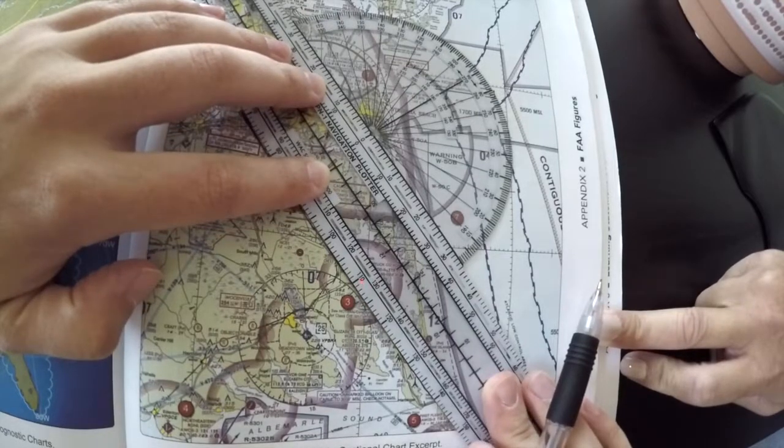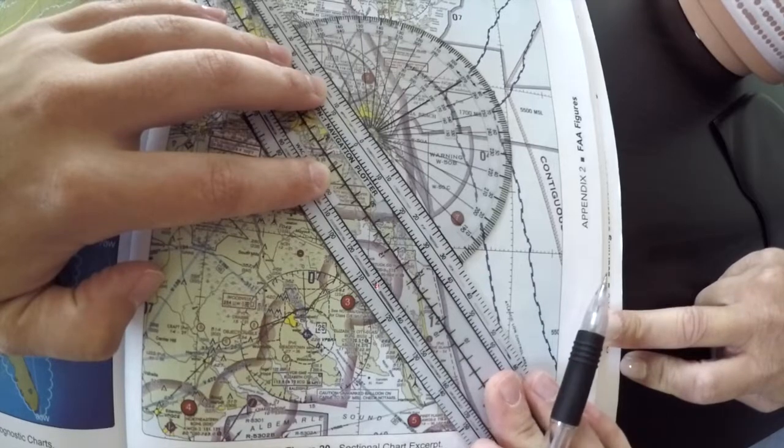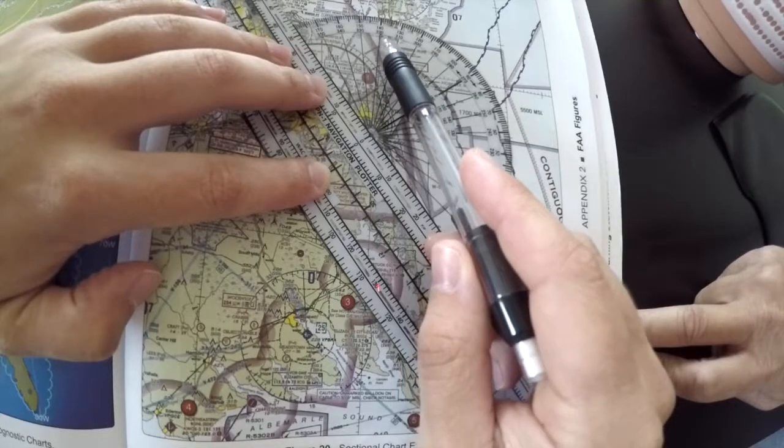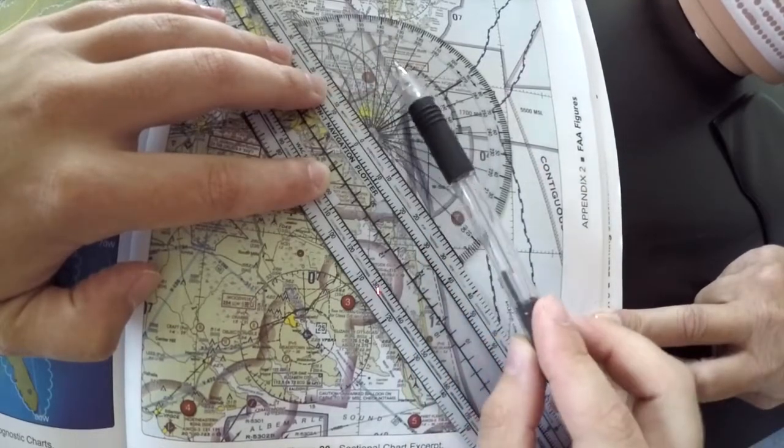Make sure it stays aligned to the course that you drew. Alright, so it looks like our course is about 140 or 320. And since we're going northwest, our course is 320.